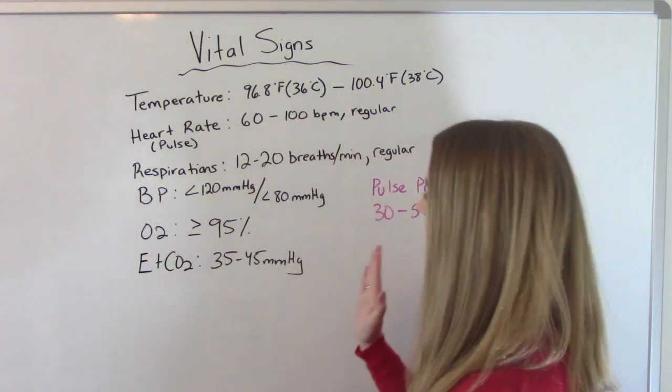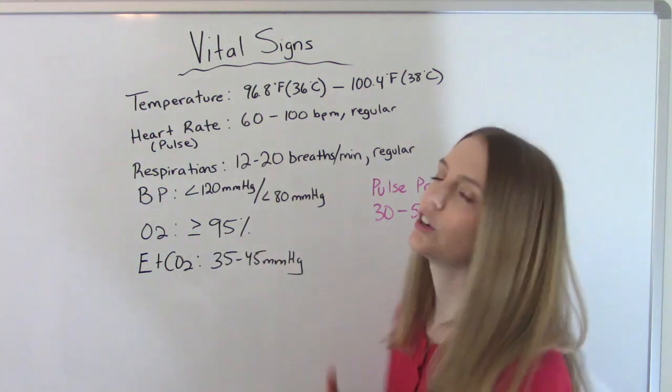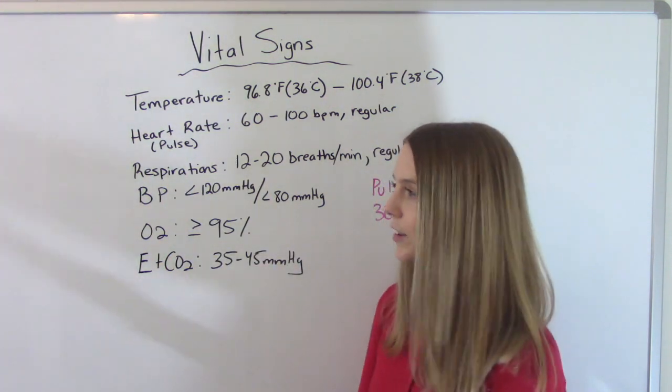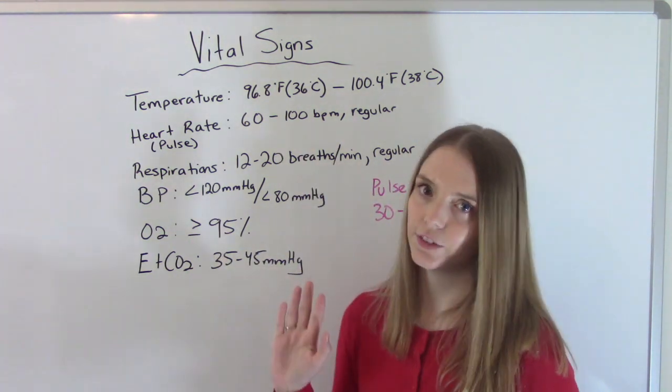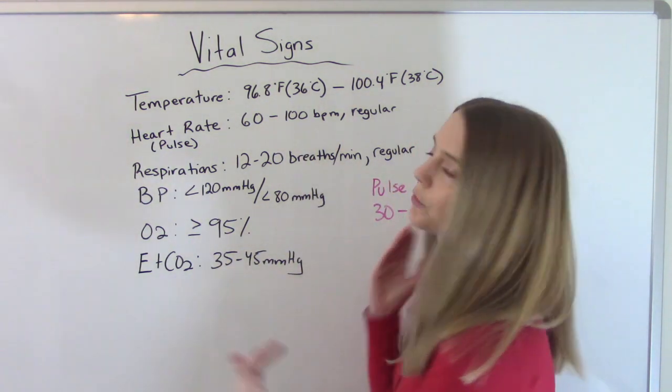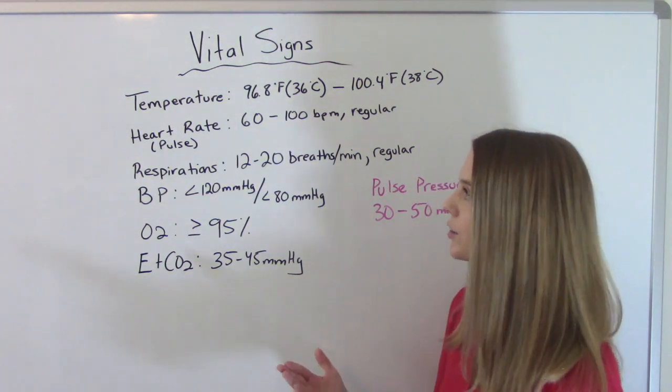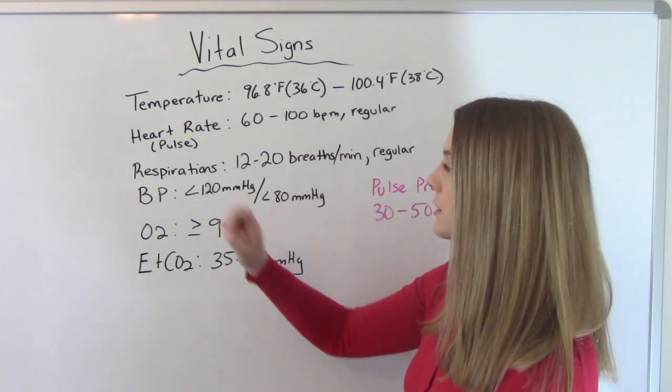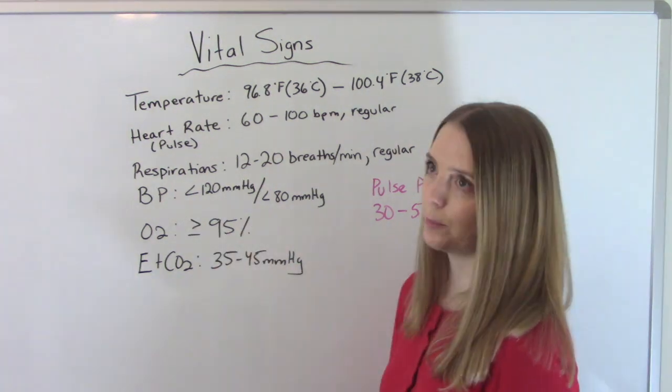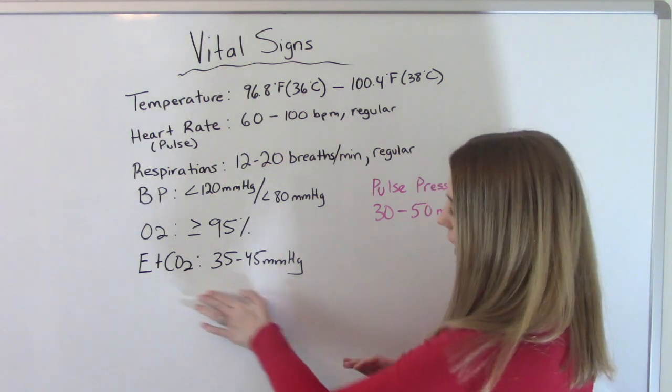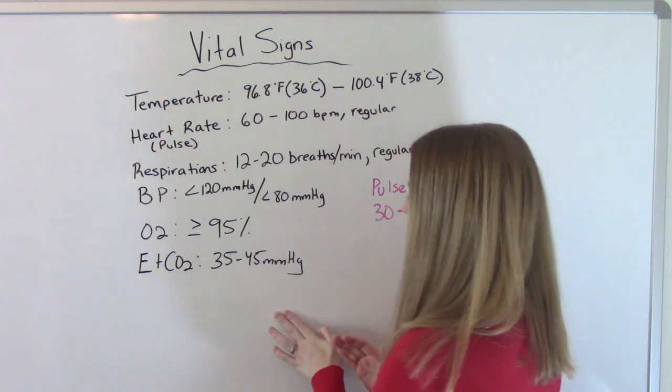The first thing I wanted to point out, these are all vital signs for adults. So if you're taking care of a child or an infant, these ranges are going to be very different. These are the typical ranges for an adult. And the typical vitals we take on an adult are temperature, pulse, respirations and blood pressure. We can also take their oxygen saturation and sometimes we will take their CO2.